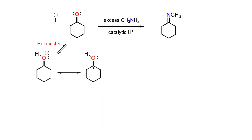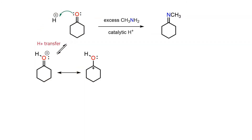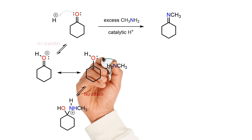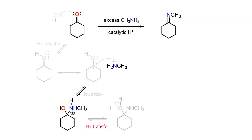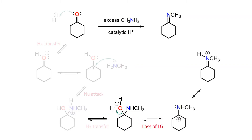The first step in the mechanism is a proton transfer to the carbonyl oxygen to provide a highly activated intermediate. A molecule of amine then behaves as a nucleophile and traps the cationic electrophile. Proton transfer to the alcohol group then sets up an excellent water-leaving group, which then leaves to produce a second resonance-stabilized carbocation.